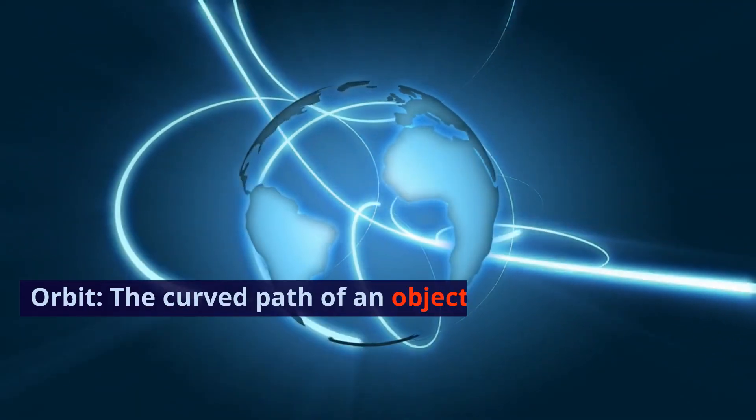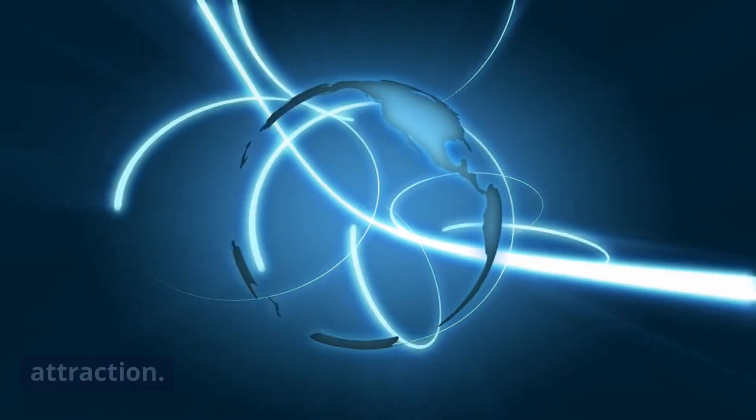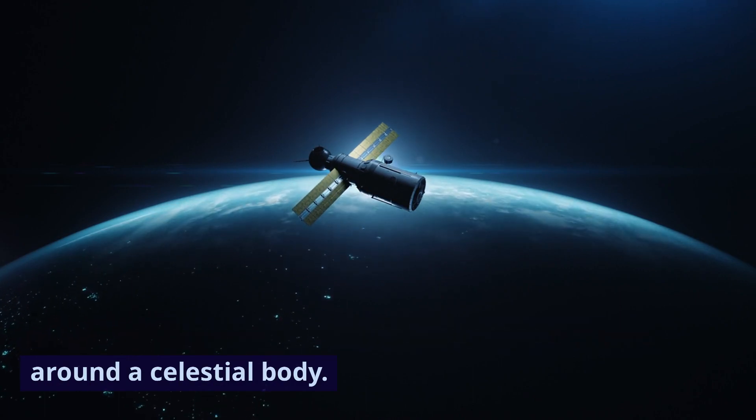Orbit. The curved path of an object around a point in space, typically due to gravitational attraction. Satellite. A natural or artificial body that revolves around a celestial body.